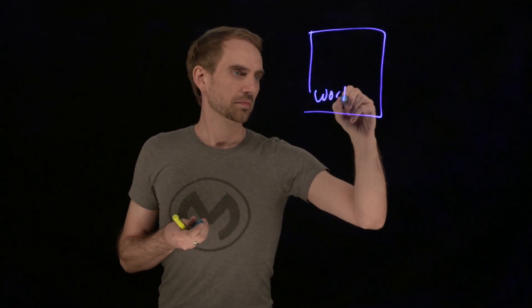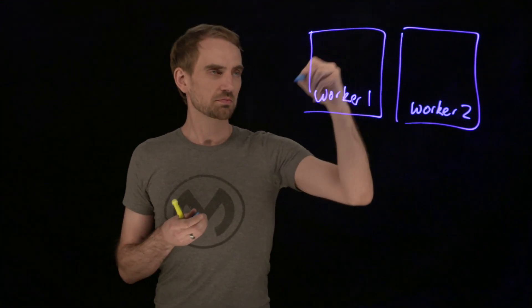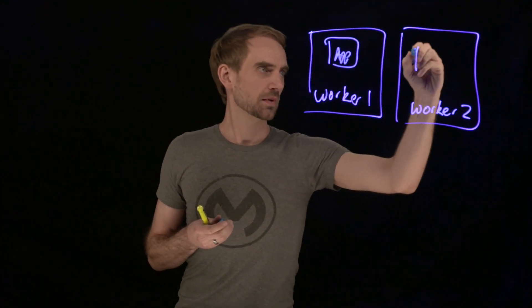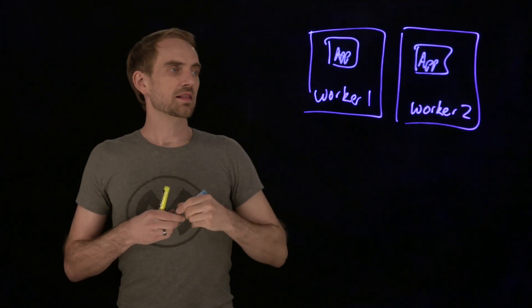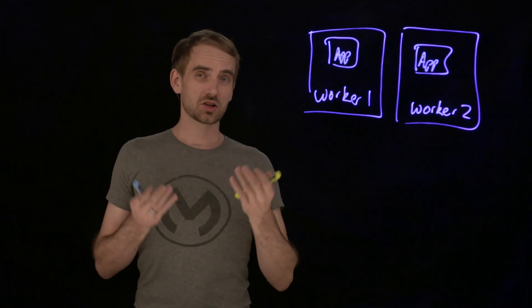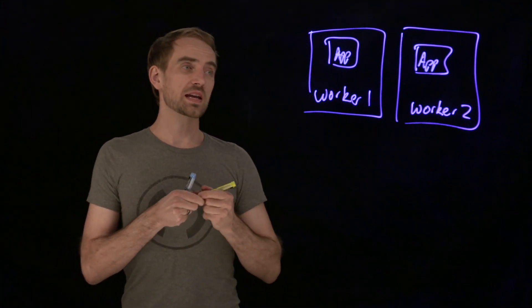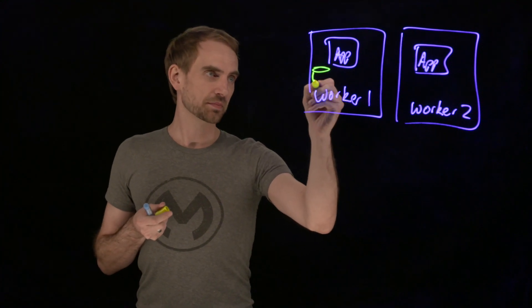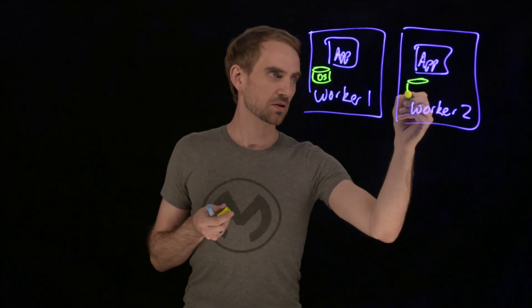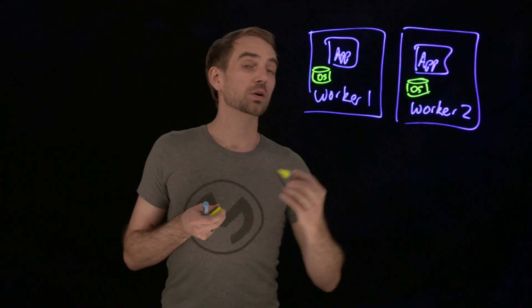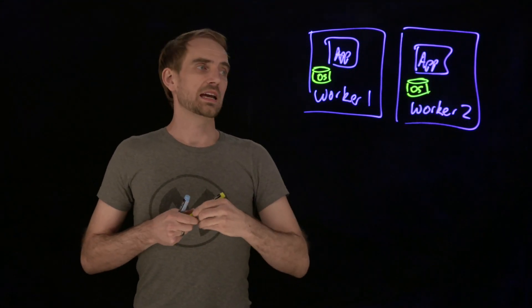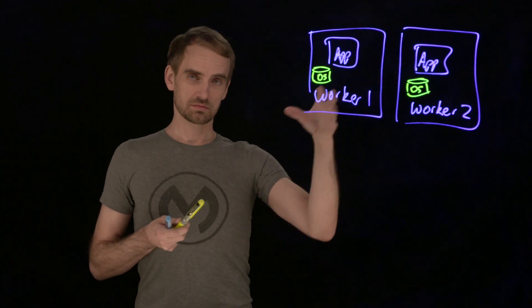So if we have Worker 1 and Worker 2 — you've got your Mule app on each — when they need to share state, they don't need to share state for everything. Some state can just be kept in memory, so there is the option of using an in-memory object store. Each worker can keep their own state, and that state is not shared — this would be the in-memory option.